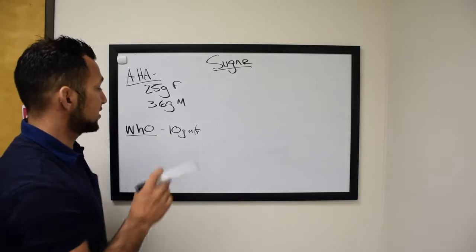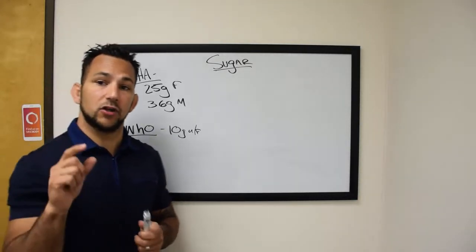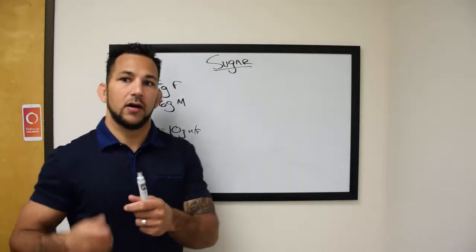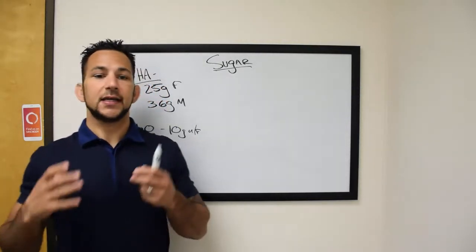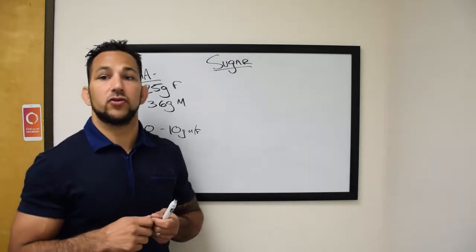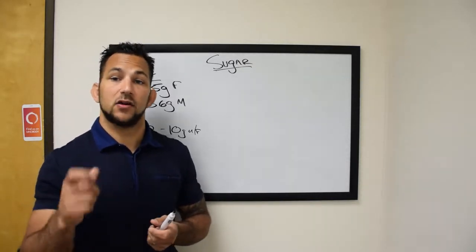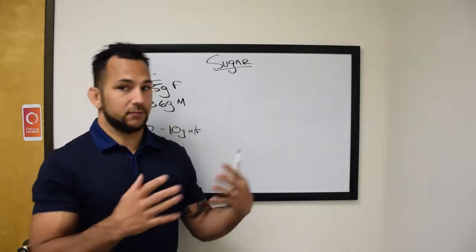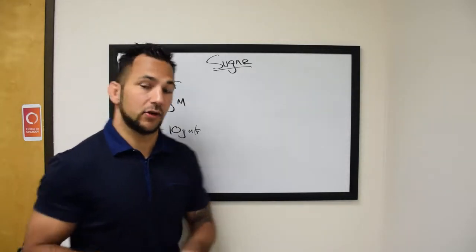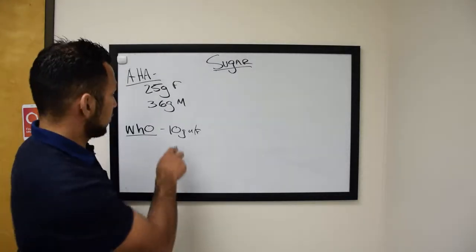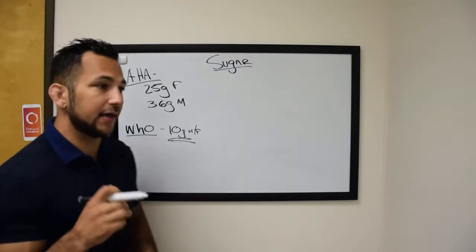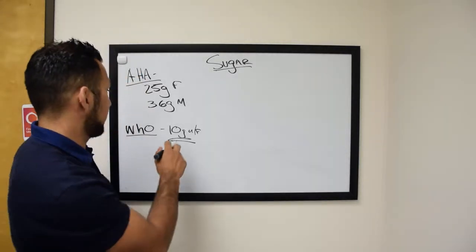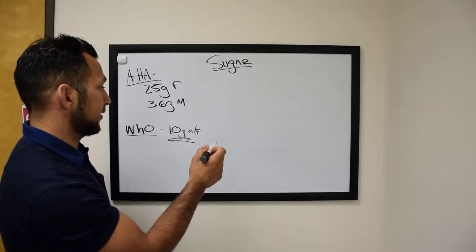Just to give you perspective, those people who have those sugar packets, those tiny sugar packets, whether it's sugar in the raw, domino, whatever it is, those are about 4 grams. So if you take 2.5 of those packets, you're at 10. So you're pretty much at the high amount of added sugar. So you got to think about that.